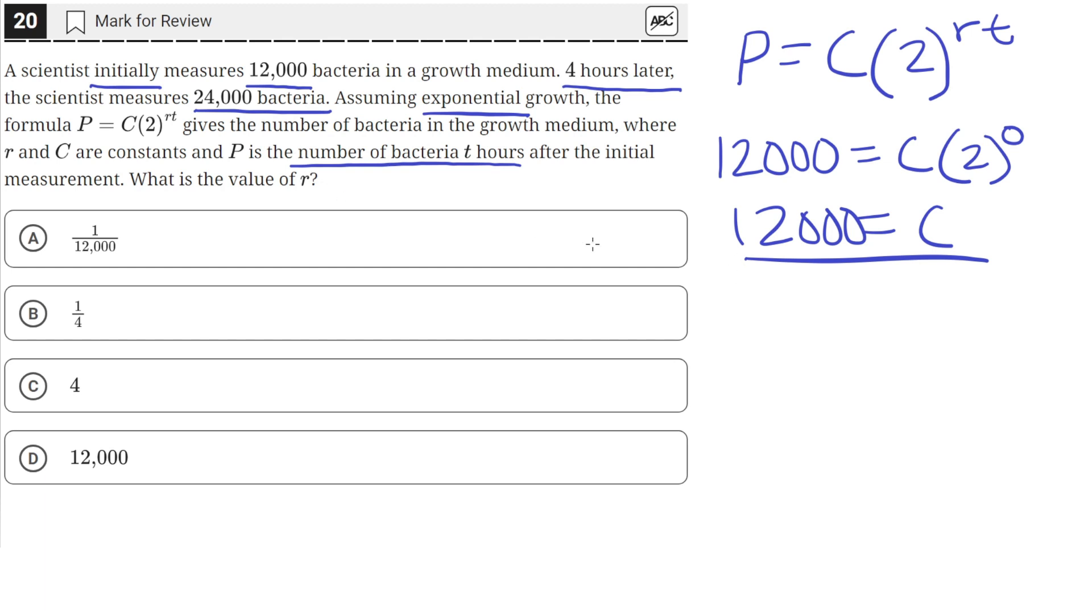Now we have everything we need in the equation except for the value of R, which is what we're going to solve for now. Our equation looks like this: P equals 12,000 times two raised to the RT, where R is some constant and T is the number of hours.